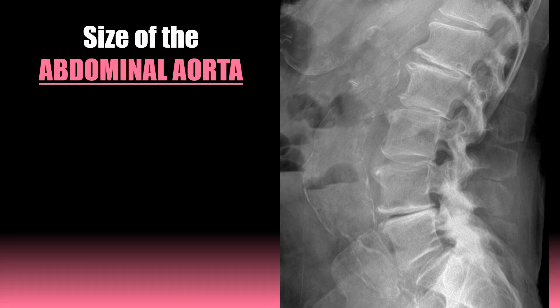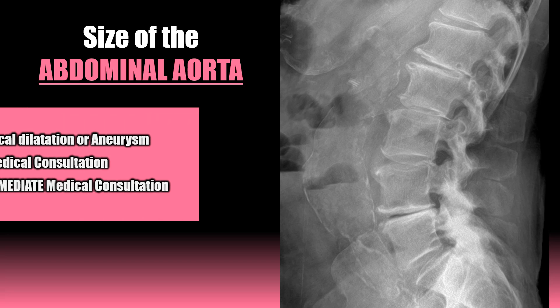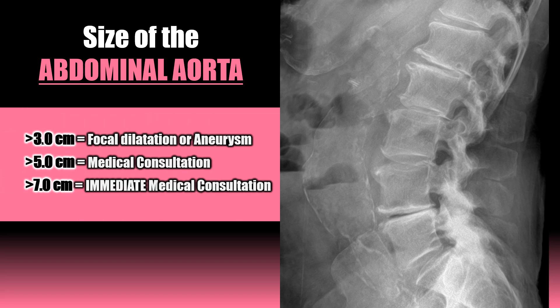So what is considered too big in regards to the size of the abdominal aorta? Over 3 cm is focal dilatation or aneurysm, over 5 cm warrants a medical consultation, and over 7 cm warrants an immediate medical consultation.